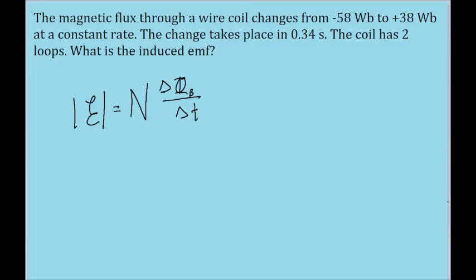Now all the variables we need are given to us in the problem. We're told that the coil has two loops, two turns of wire, so that's two.